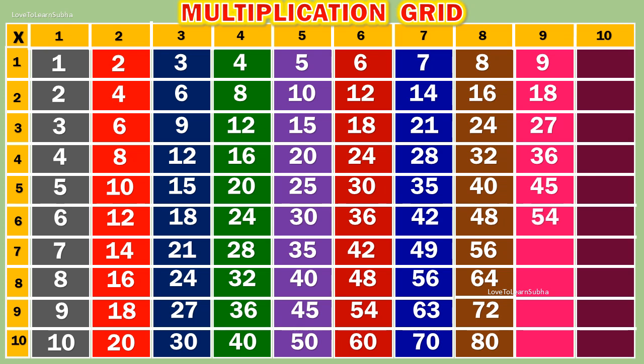9 6s are 54. 9 7s are 63. 9 8s are 72. 9 9s are 81. 9 10s are 90.